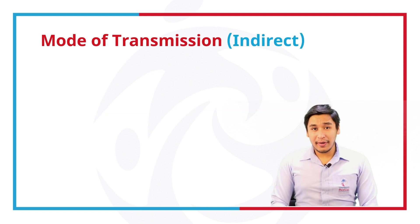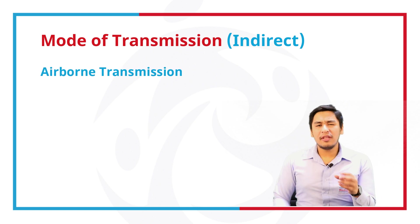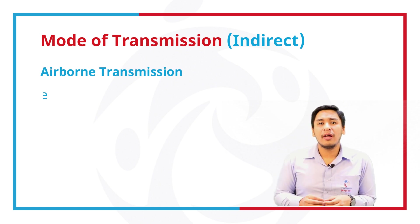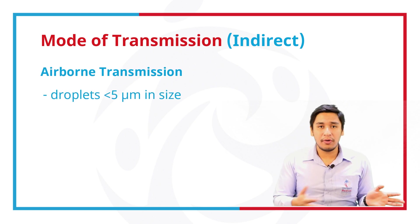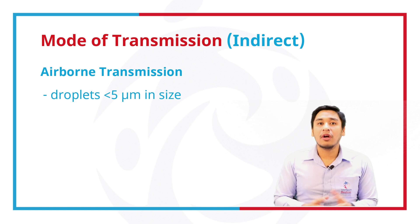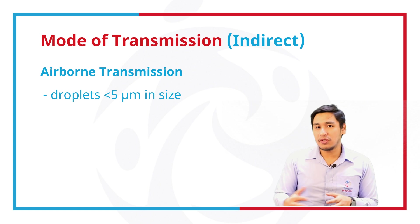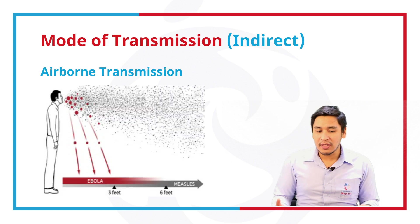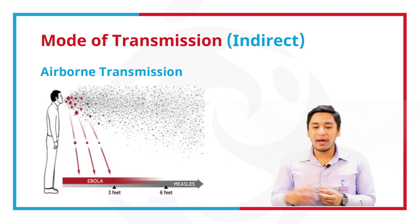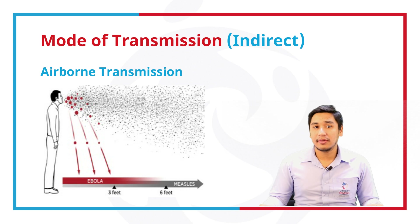Indirect transmission, or airborne transmission. These are droplets that are lesser in size than those described in droplet transmission — less than five micrometers — and usually infectious agents are carried by dust or droplet nuclei suspended in air.